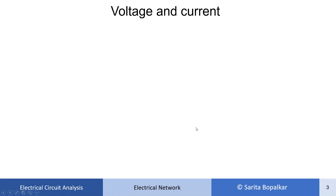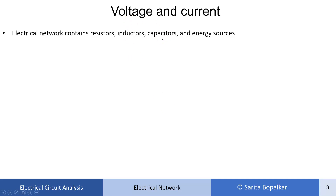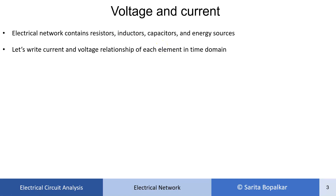Now, to apply KVL and KCL in transient analysis examples, we should understand voltage and current for different elements in a network. An electrical network contains resistor, inductor, capacitor, and energy sources. So we should understand the current and voltage relationship for these elements.